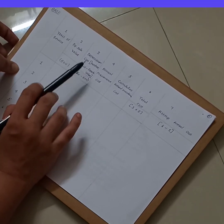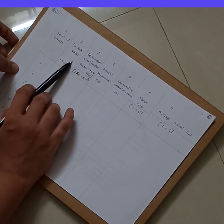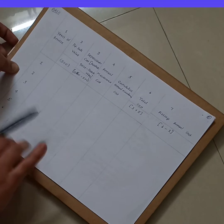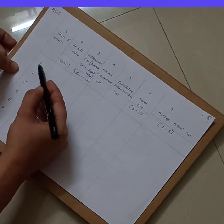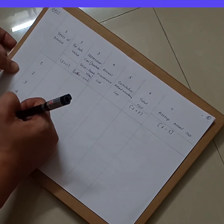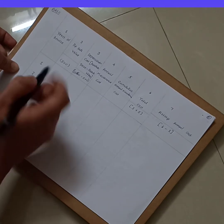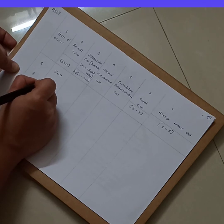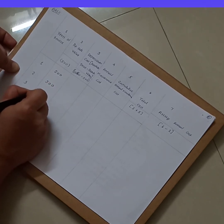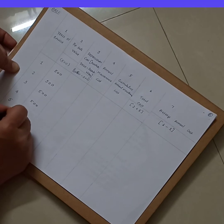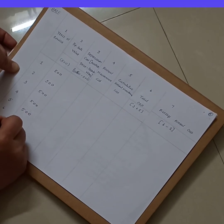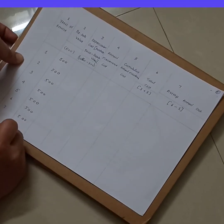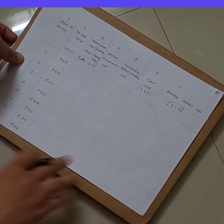For the table: year of service runs from 1 to 8. The resale price, as per the question, remains 500 for all 8 years. The depreciation cost — purchase price minus resale value — is 10,500 minus 500, which equals 10,000, and this value remains the same for all years.